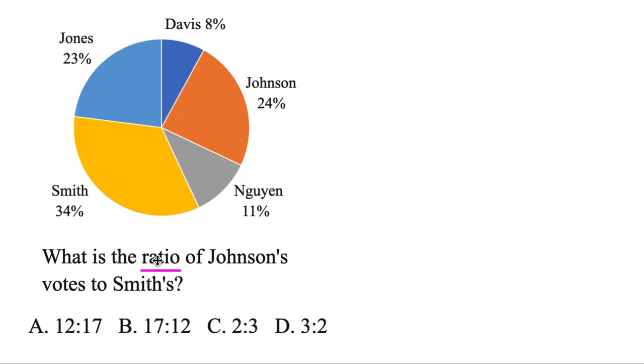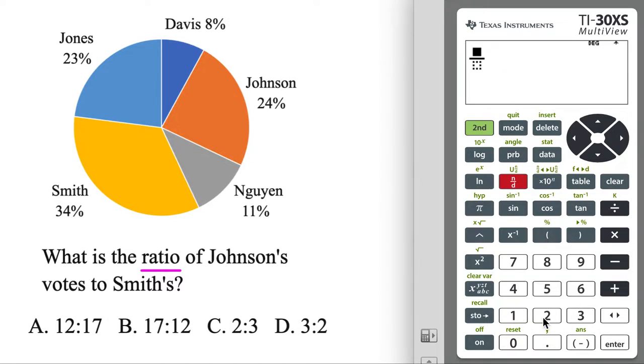Now if you're doing a ratio with percents, you could just leave off the percent. So the ratio of Johnson's votes, that's 24, to Smith's, 34. You could just stack the numbers. So let's do it.